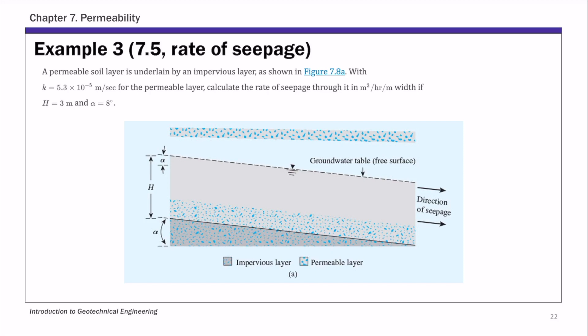If you look at this problem setup, the direction of the seepage is given. So this is an inclined permeable layer and this is that angle alpha. This angle of inclination alpha is eight degrees. We have this alpha value and we know the height of this layer, that's capital H, and we are also given permeability or hydraulic conductivity for this permeable layer.